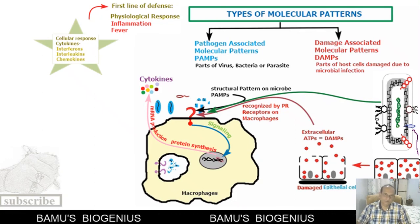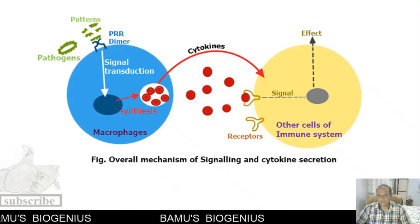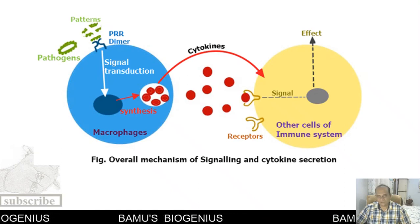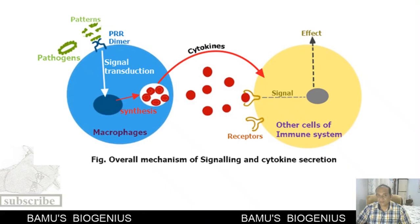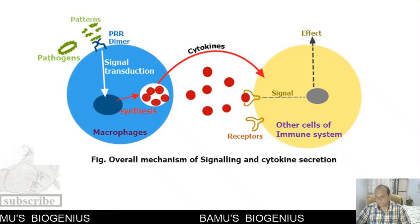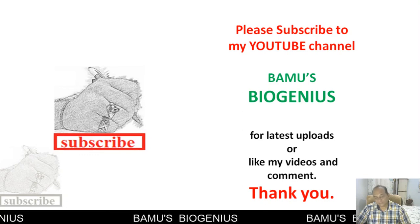So this is how PAMPs and DAMPs are responsible for stimulation of other cells of the immune system, which amplifies the effect of cytokines and thereby successfully destroys pathogens. Please subscribe to my YouTube channel Bamoos Biogenius for the latest updates, like my videos, and comment.